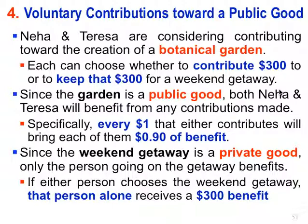So as I said, the problems were number four and five. Number four was about voluntary contributions towards the public good, and it presented the following problem: Neha and Teresa are considering contributing toward the creation of a botanical garden. Each can choose whether to contribute $300 to the garden or to keep that $300 for a weekend getaway. Since the garden is a public good —